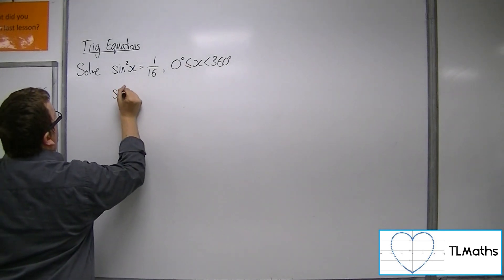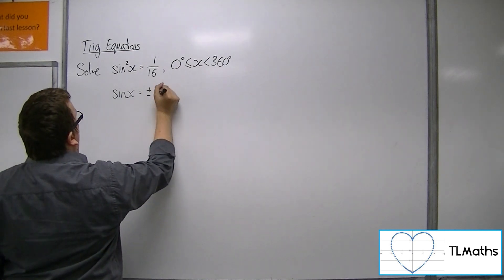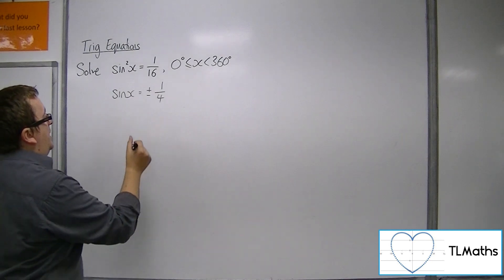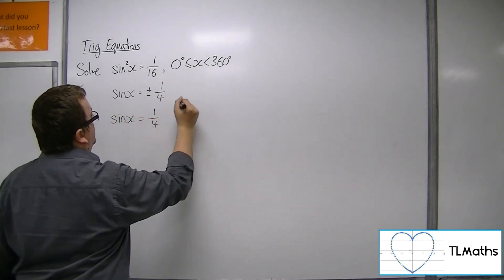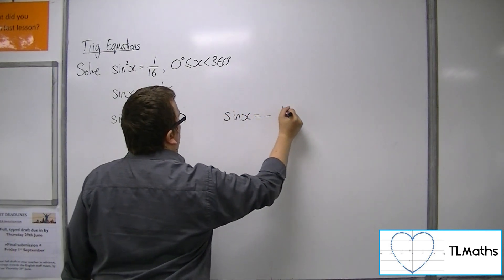So I would get sine x, but the square root of 1/16 is plus or minus 1/4. And so actually, we need to solve two equations here: sine x equals 1/4 and sine x equals minus 1/4.